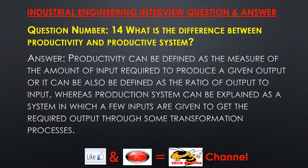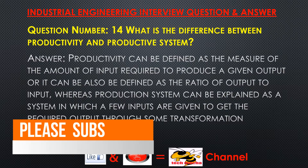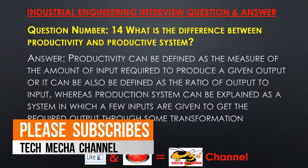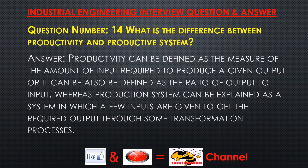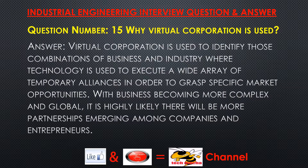Question number 14: What is the difference between productivity and productive system? Answer. Productivity can be defined as the measure of the amount of input required to produce a given output, or as the ratio of output to input, whereas a production system can be explained as a system in which inputs are given to get the required output through some transformation processes.